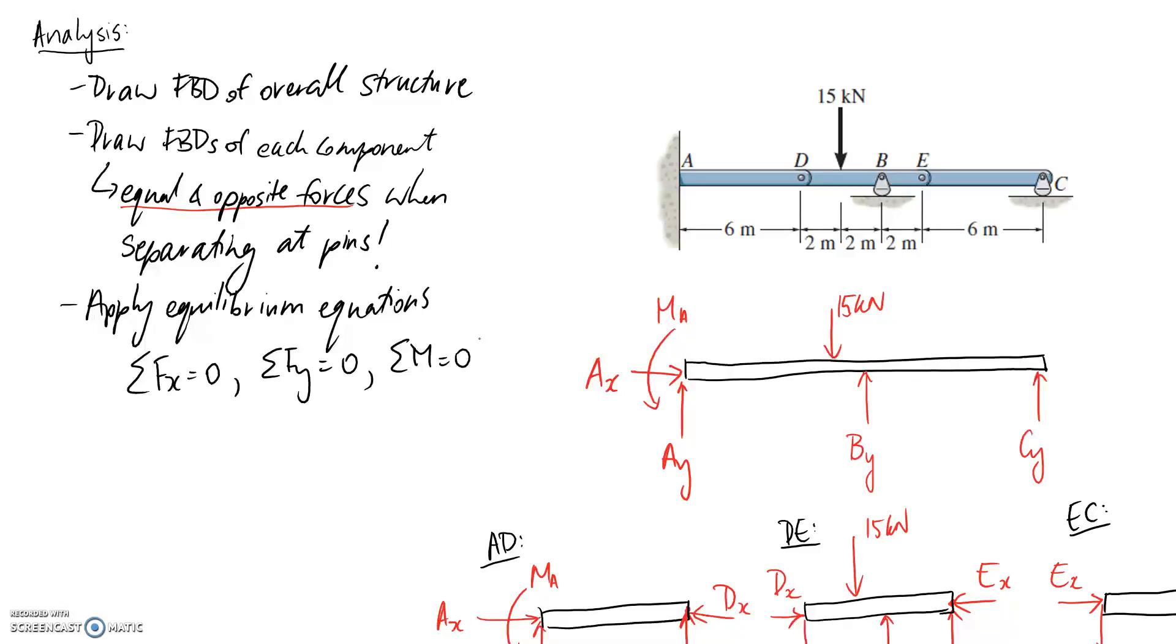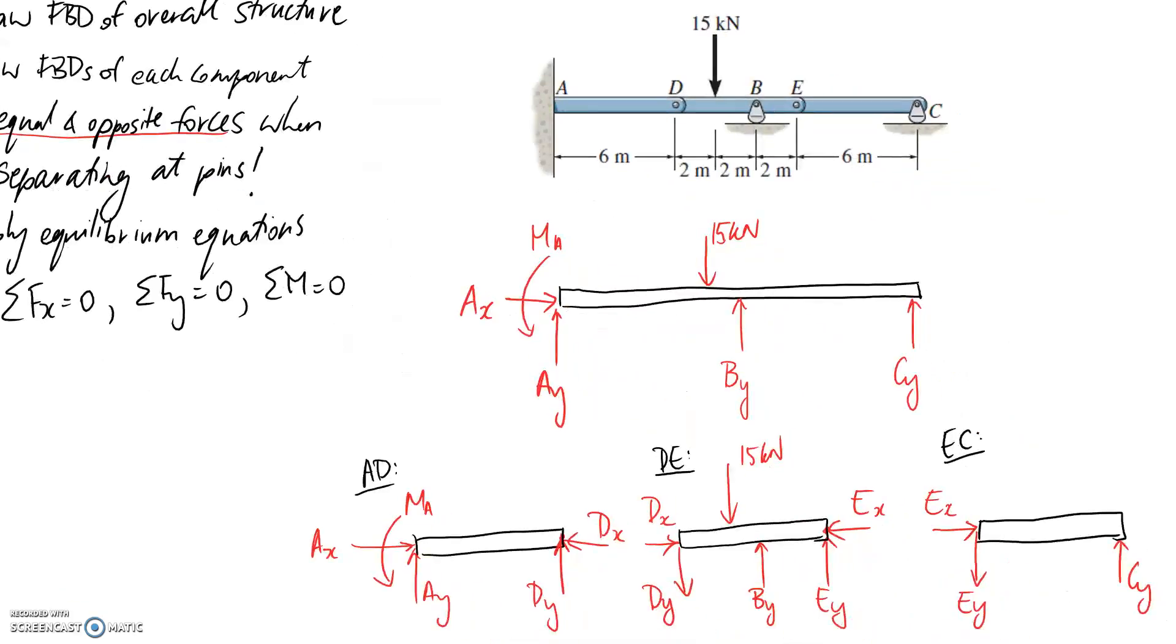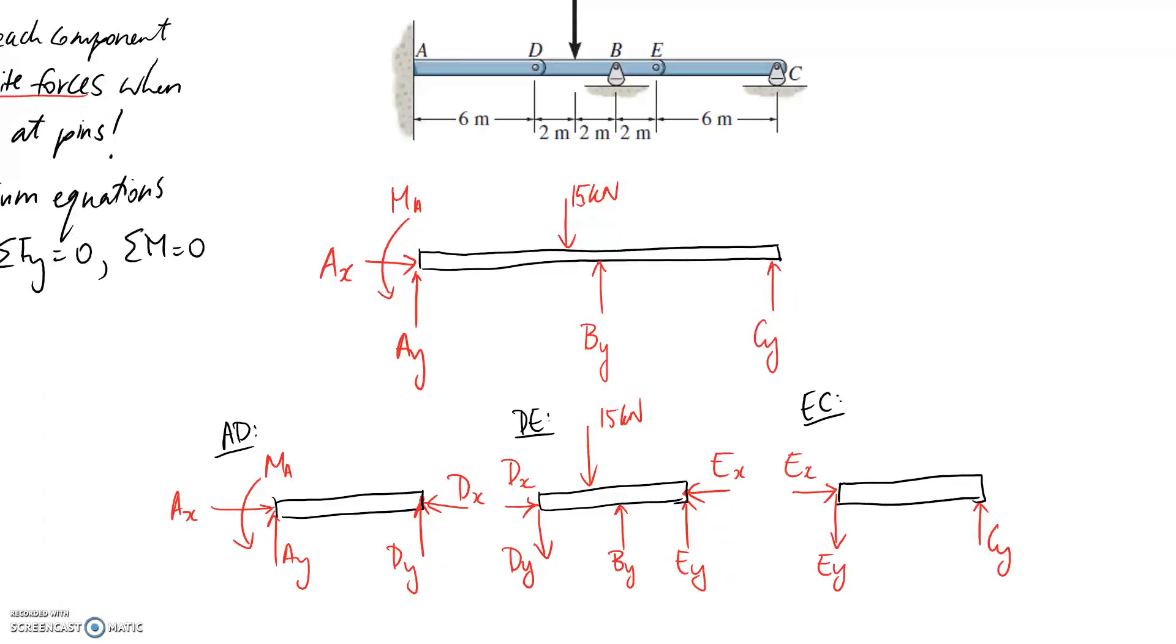So the key here is to start working with diagrams where you have a maximum of three unknowns, ideally, or being able to kind of find a solution or find an equation that you can apply where you only end up with one unknown in the equation. So you're able to solve directly. So it's a little bit of jumping back and forth between the different diagrams that you've got.